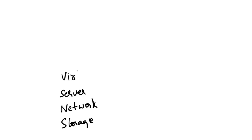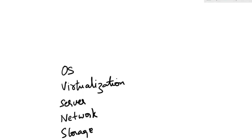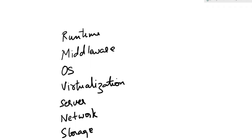Then we have virtualization software, which is used to run multiple VMs on the same server so that we don't waste space, memory, or CPU. Then we have the operating system — Windows or Linux — and then middleware, and then runtime. Runtime can be IIS for a web application or Docker for a container. And then we have the application itself and our data.